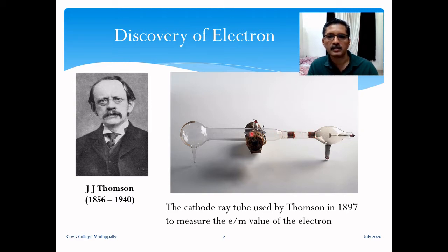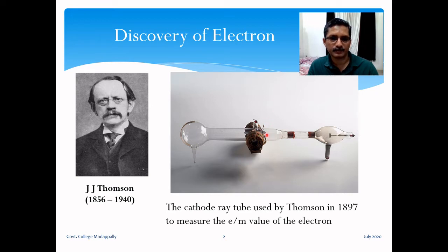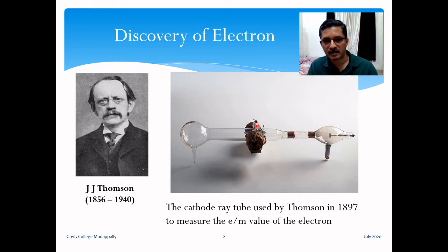The narrow electron beam then reaches two horizontal metal plates — one on each side — used to apply an electric field along the vertical direction. If we call the beam direction x, the electric field is applied along the y-axis. There are also poles of an electromagnet: when current is passed through the magnet, a magnetic field is produced along the z-direction. So essentially the electron beam passes through crossed electric and magnetic fields — mutually perpendicular fields.